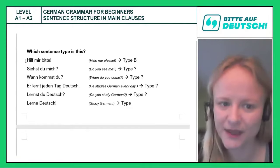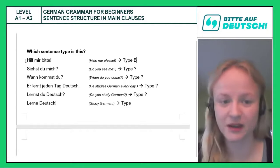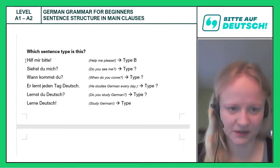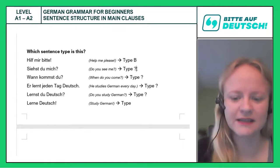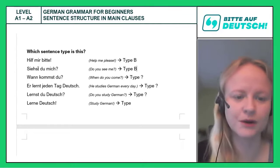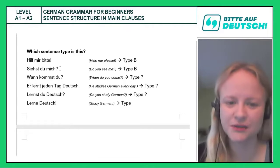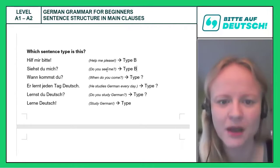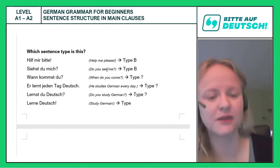Second example: 'Siehst du mich?' — 'Do you see me?' We have a question mark, so this is a question. But which kind? 'Do you see me?' is a yes/no question, therefore sentence type B. The verb is placed in first position. If you translate word by word it reads 'See you me?' Note that in English a yes/no question needs 'do' in front — German does not have this equivalent, so we directly ask 'Siehst du mich?'